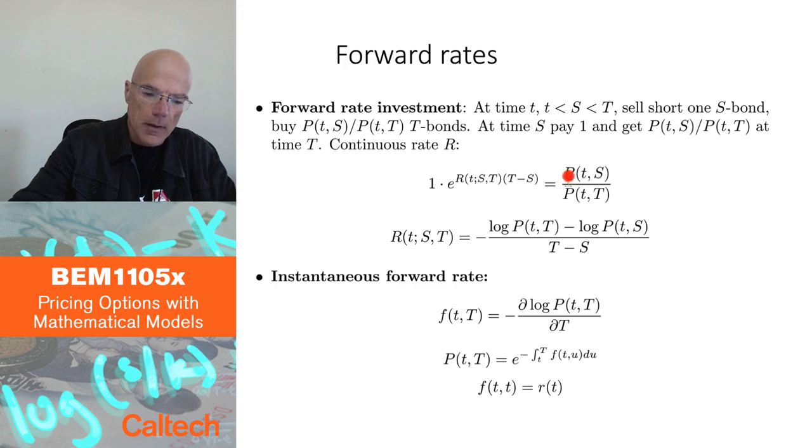If we compute it, if we take logs to get rid of the exponential function, it is equal to minus log of the bond with higher maturity minus log of the bond with the lower maturity over T minus S.